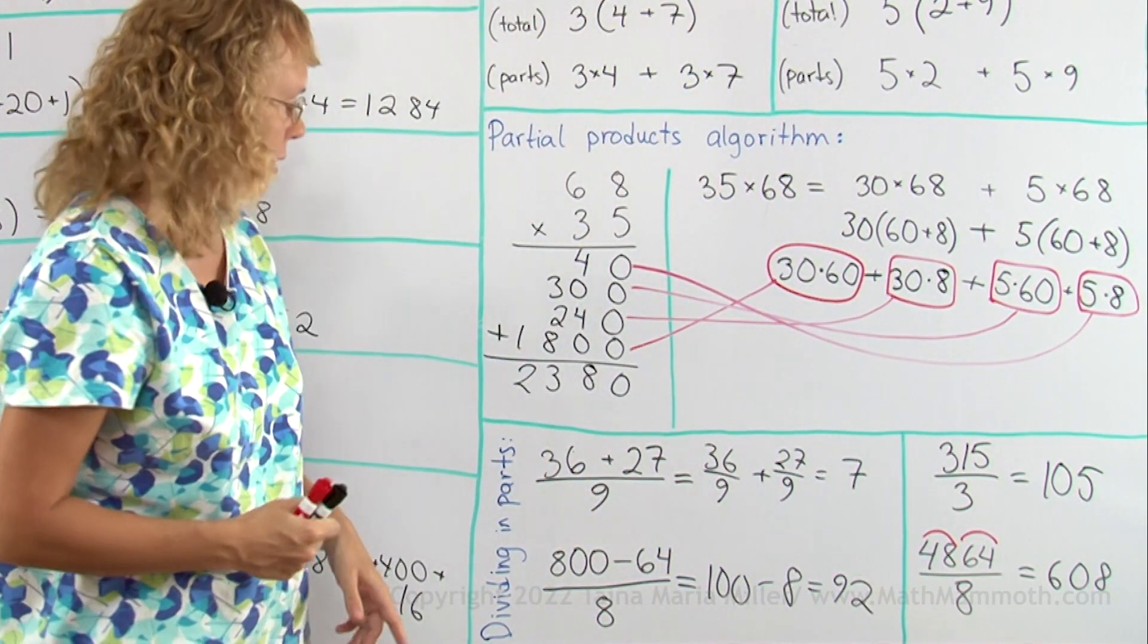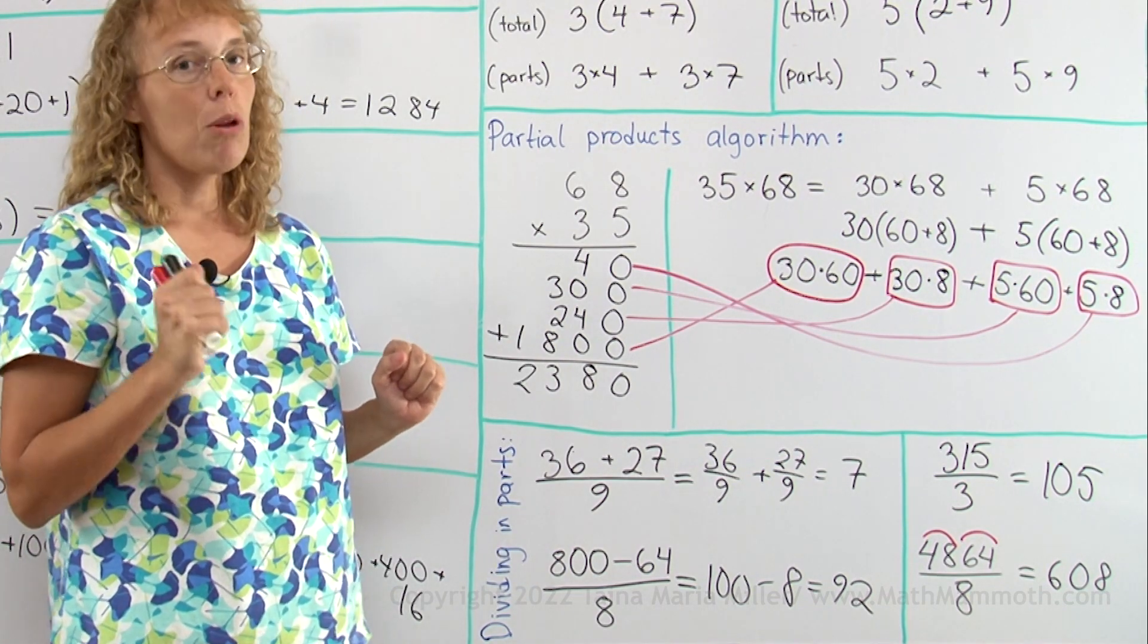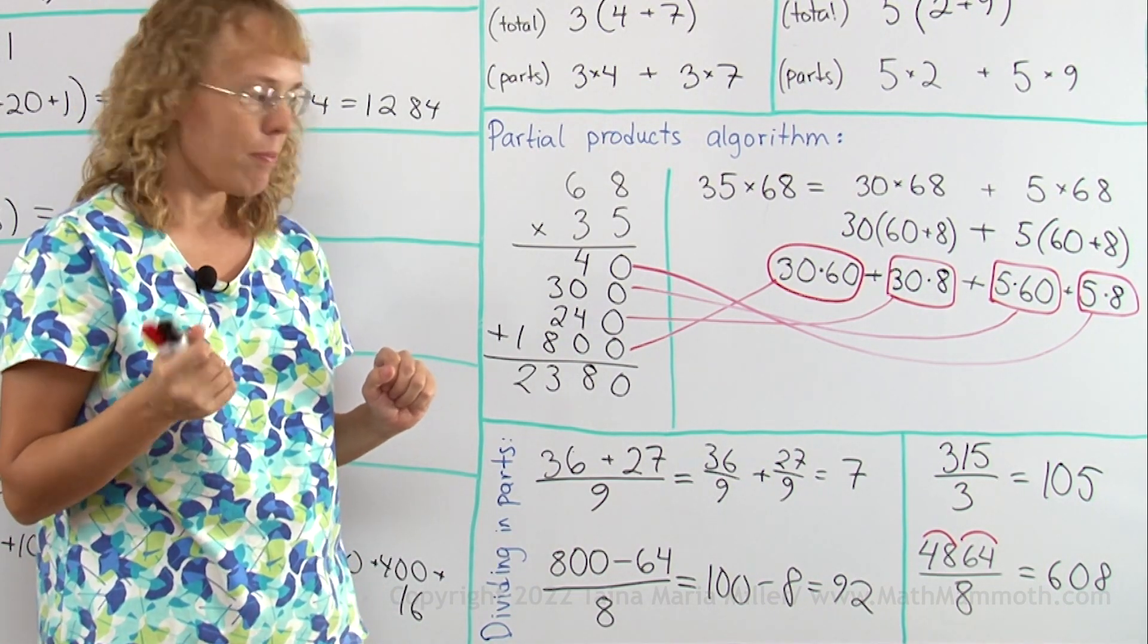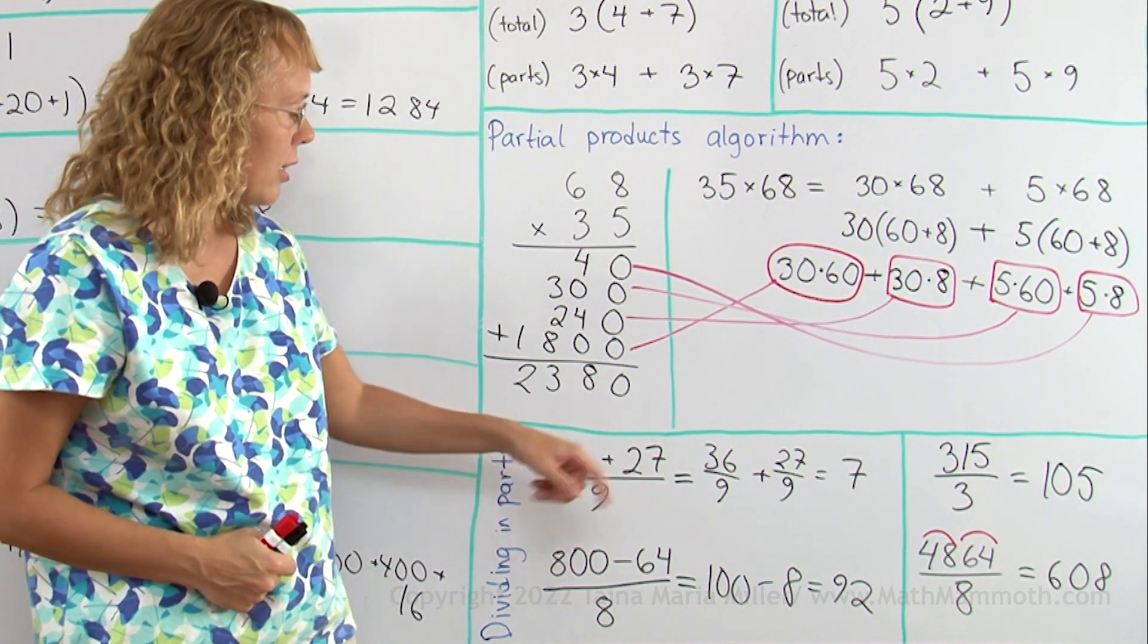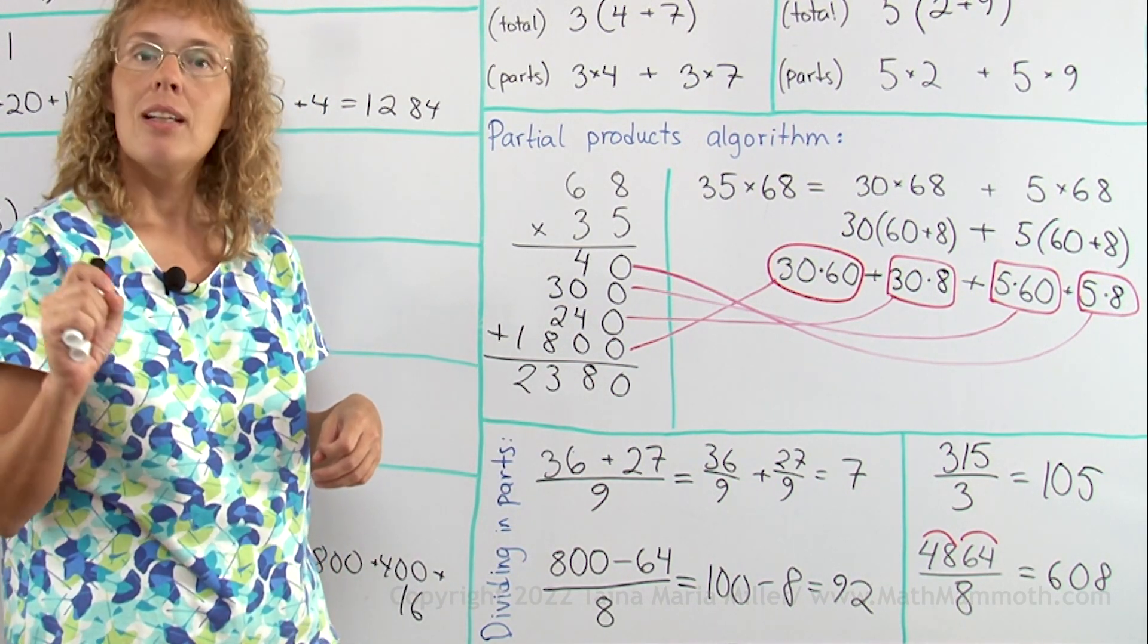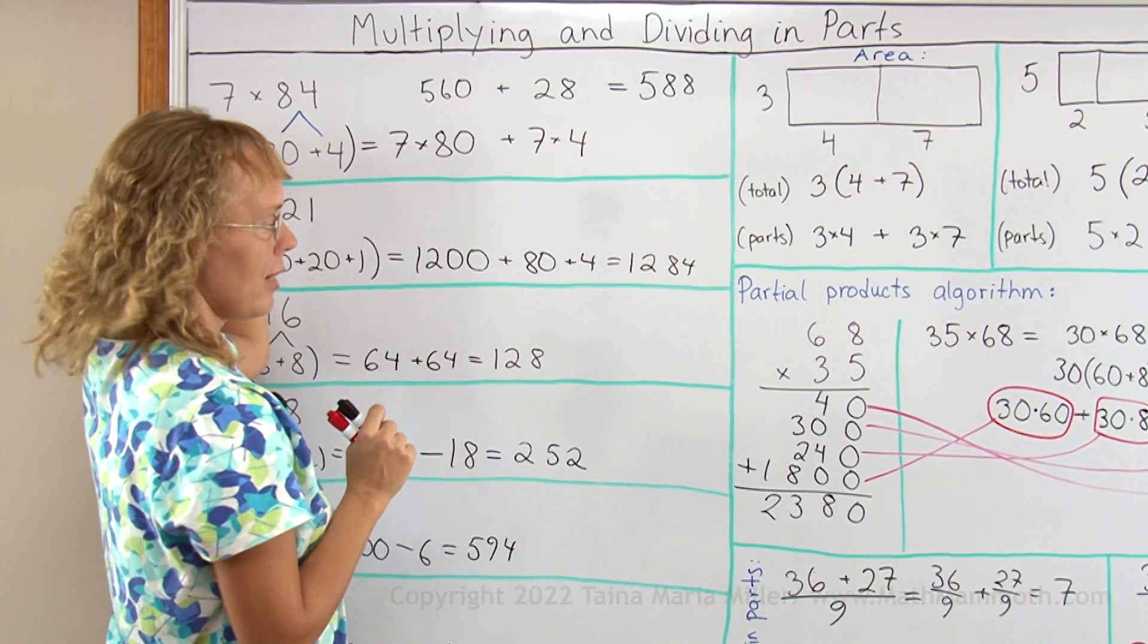The reason why we can divide in parts has to do with the fact that every division can always be written as a multiplication. This division here is actually 36 plus 27 multiplied by 1 ninth. And if it is a multiplication, then this principle applies.